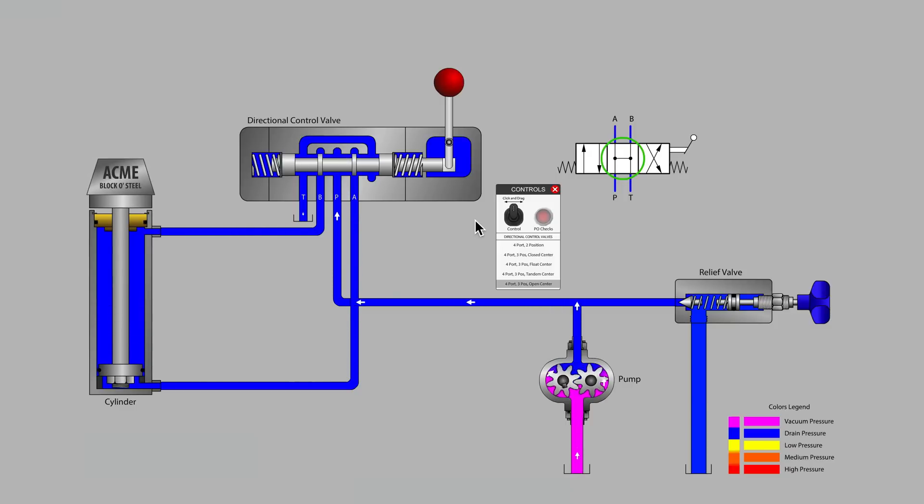Both the open and tandem center valve unload the pump when returned to center. In so doing, a simple fixed displacement pump can be used without passing flow over the relief valve when the system is in neutral. Heating and energy draw is thus minimized.